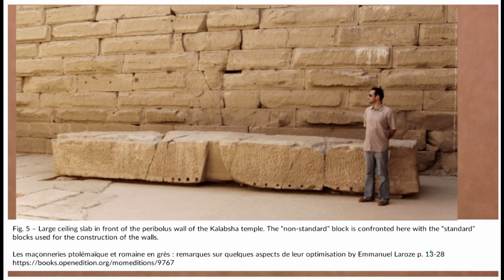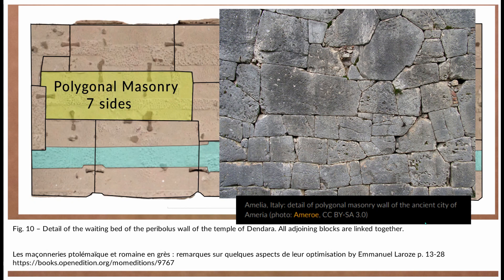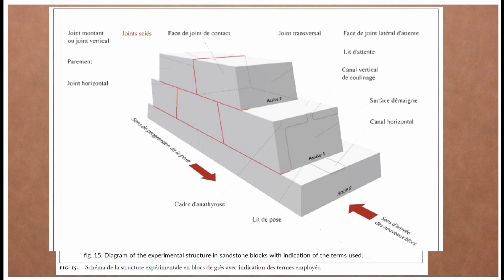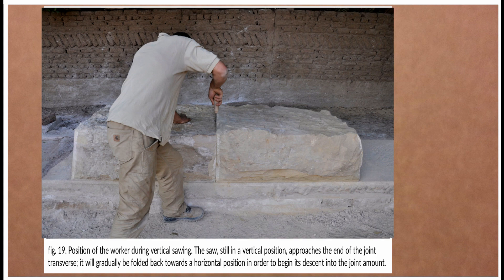So how did they create these polygonal walls? It's beautifully simple in its explanation, and that comes from the lost saw tools and the marks found in the record. Here we see an illustration and diagram of an experimental structure in sandstone blocks with indication of the terms used. This shows how simple and beautiful it is: if you take a single block and cut it in half, the saw is defining the cut distance — push them together and those blocks fit perfectly.